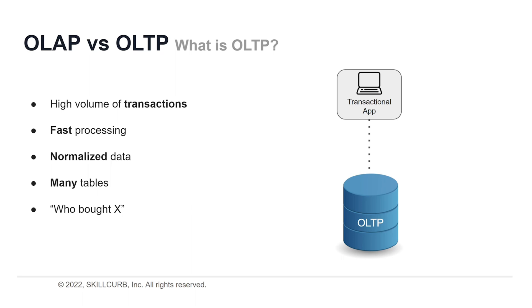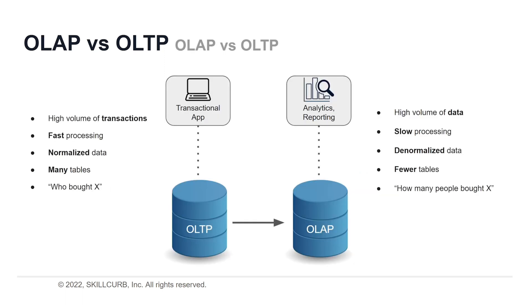Many organizations use OLTP systems to provide data for OLAP. In other words, a combination of both OLTP and OLAP are essential in our data-driven world. Let's compare the two systems. The main distinction between the two systems is found in their names — analytical versus transactional. Each system is optimized for that type of processing.